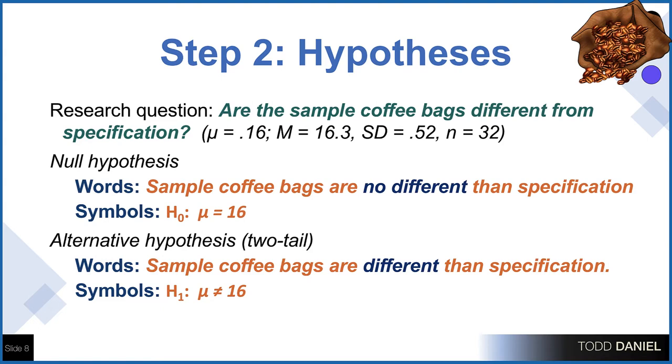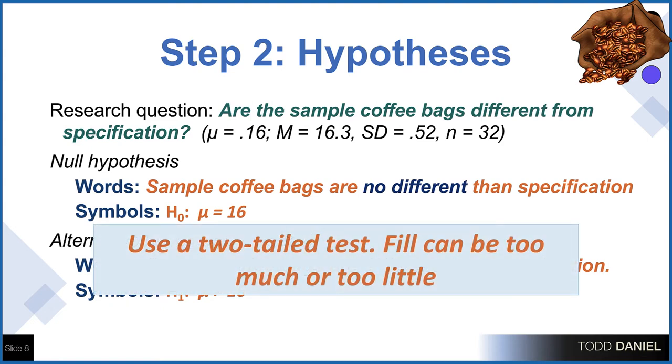Why are we using a two-tailed test for this example? Because changes in either direction would be bad, certainly something we would want to know about. The bags can be filled too much or too little, and in either case we'd want to know that so that we could make adjustments. Changes to either direction or either tail are things that we would want to know about. That's why we're using a two-tailed test.